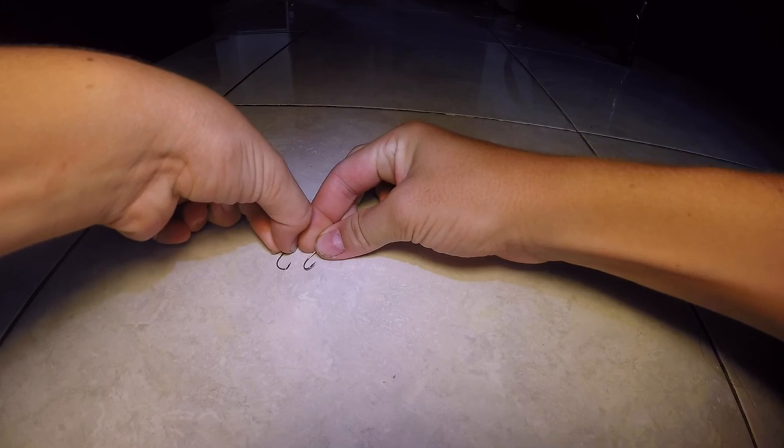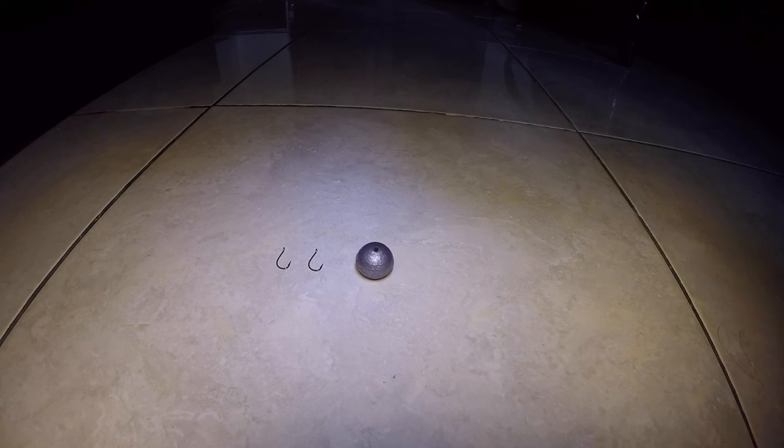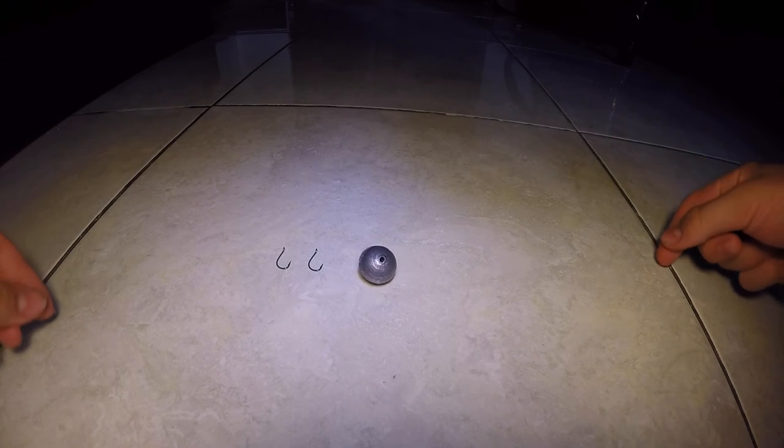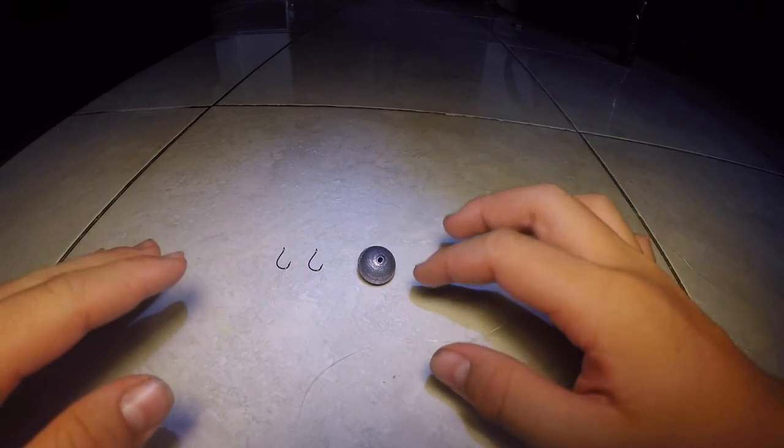Without any further ado, let's get into it. All right guys, so what you're going to need is two hooks, one sinker, and obviously you're going to need the piece of line that you're going to be working with. So this is all you need, it's really simple.